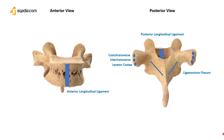The spine gives attachment to several muscles, most importantly the trapezius, rhomboideus, latissimus dorsi, the serratus posterior superior and inferior, and other muscles of the back.